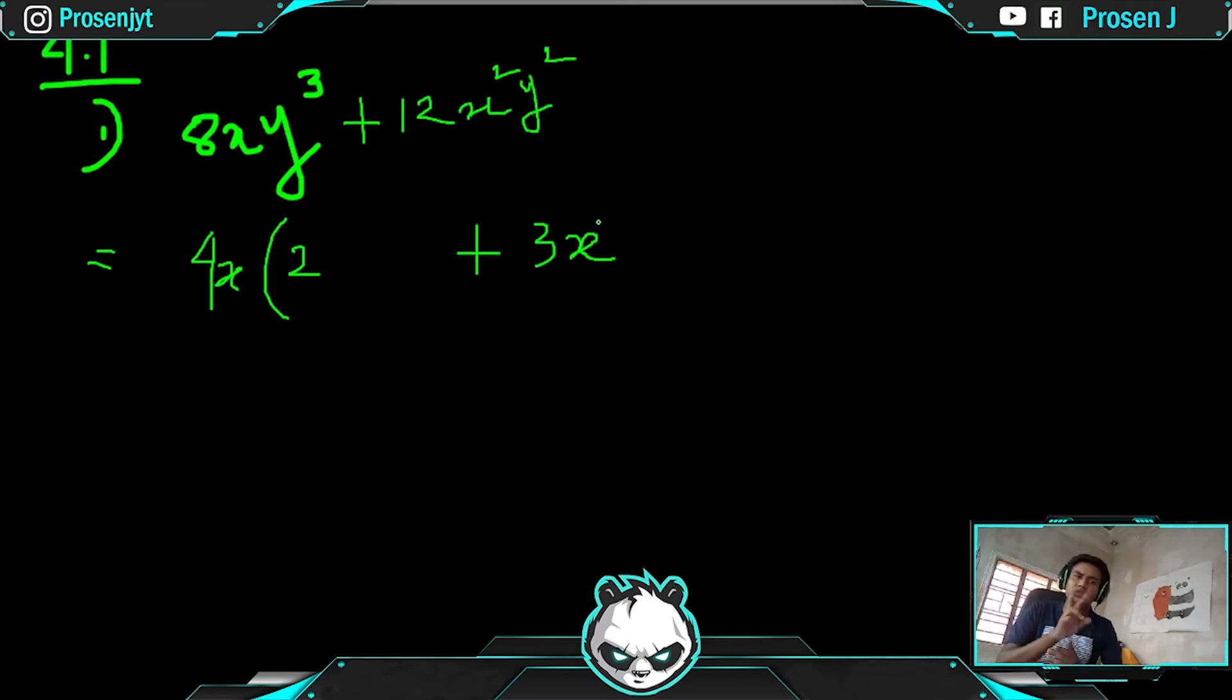Lastly, we check y³ and y² format. First has y³, second has y². The lesser is y², so we take y² as common. In the first one, three y's were there, we took two, so only one y remains.